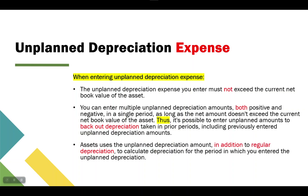Assets use the unplanned depreciation amount in addition to regular depreciation to calculate the depreciation for the period in which you entered it. For example, if an asset has a regular depreciation amount of $100 per period and you enter a positive unplanned depreciation of $20, the total depreciation for that period will be $120. Conversely, if you enter a negative $20 unplanned amount, the total will be $80.